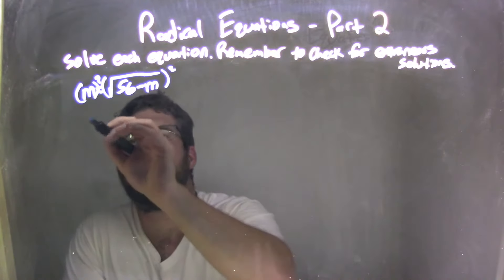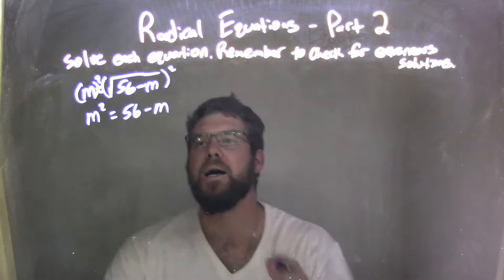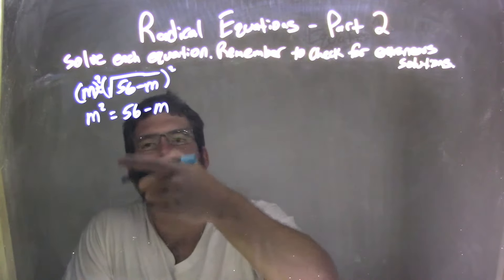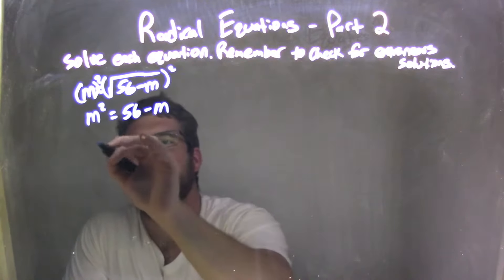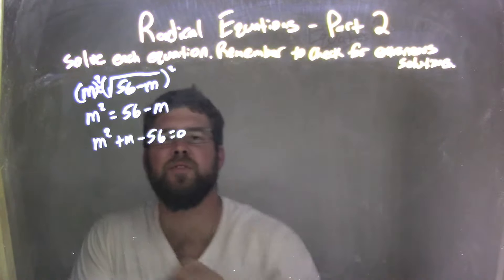Alright, m squared equals 56 minus m. Now I've got to bring everything over. I'm going to add the m to both sides, subtract the 56 to both sides, and I'm left with m squared plus m minus 56 equals 0.